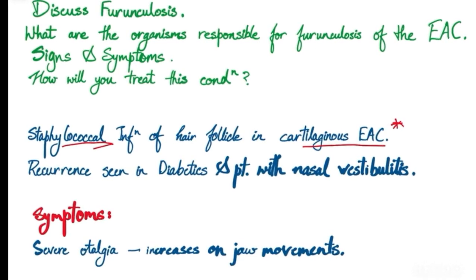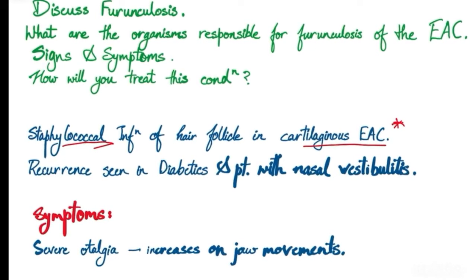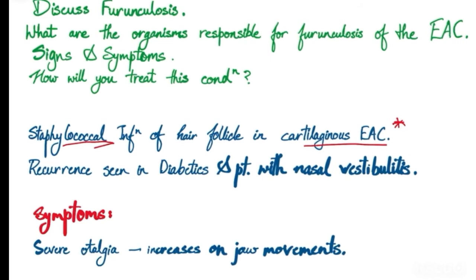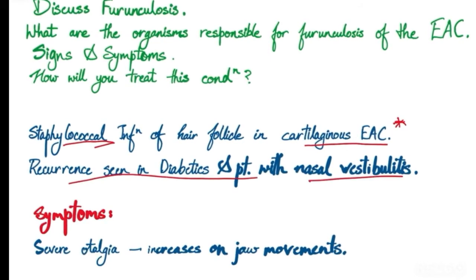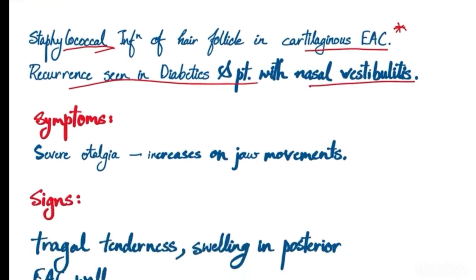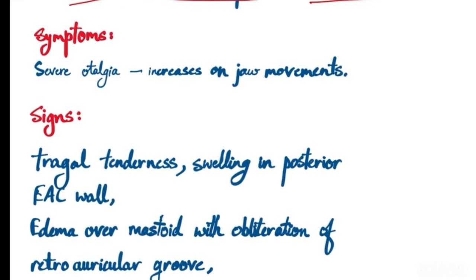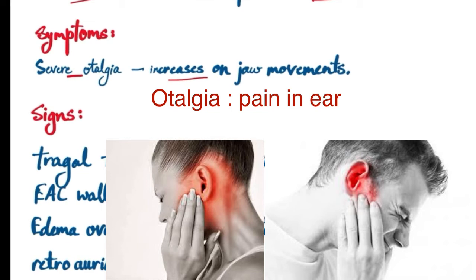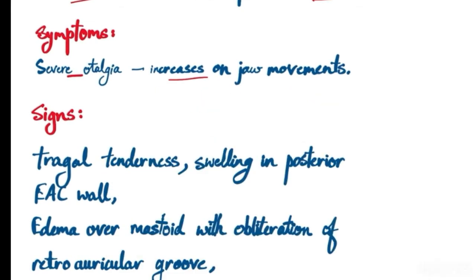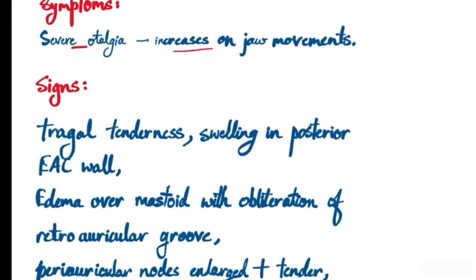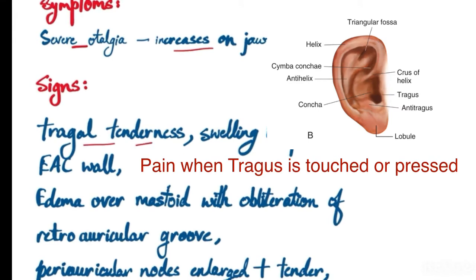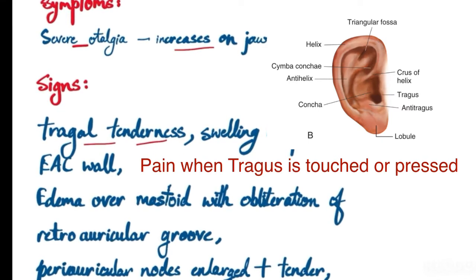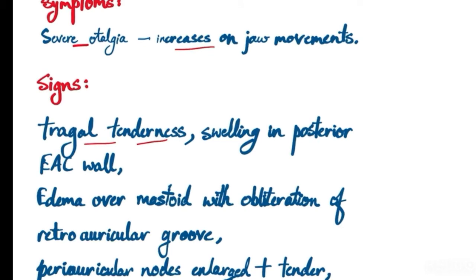Recurrence is seen in diabetics and patients with nasal vestibulitis. Symptoms include severe otalgia — that is, severe pain in the ear — which increases on jaw movement.